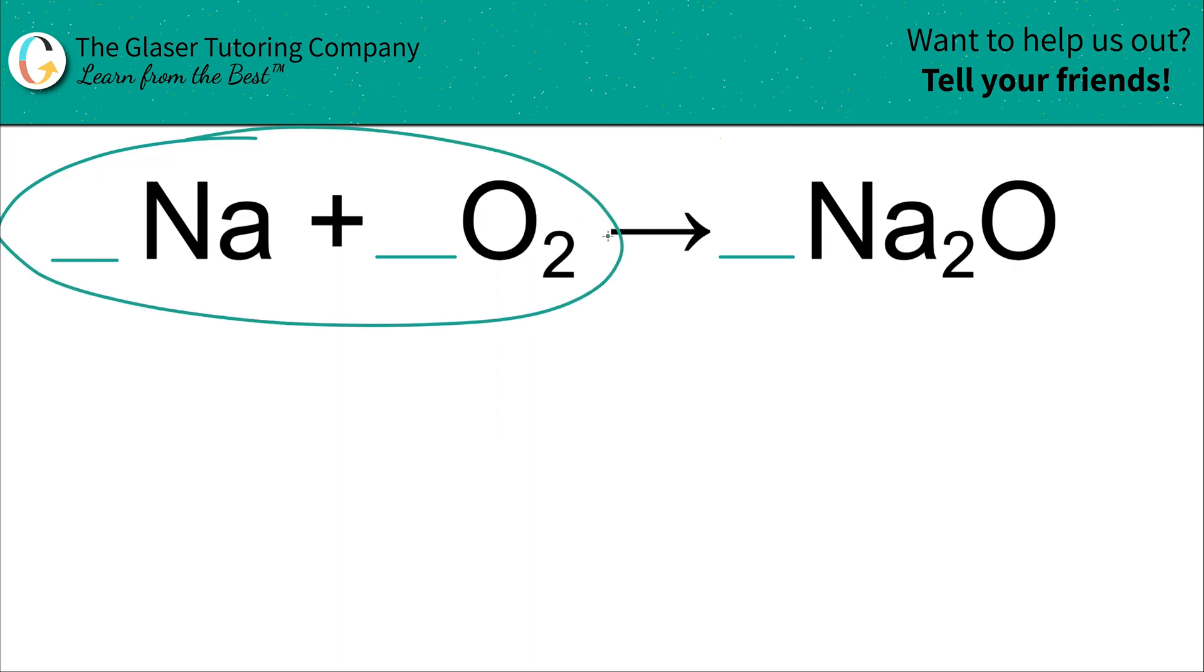First thing is I like to place in these lines to the left of the molecules, and that will represent the location of the coefficients. Next thing is just keep in mind the general principle that however many elements and atoms you have on the left-hand side of that reaction have to equal however many elements and atoms you have on the right.